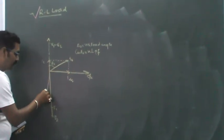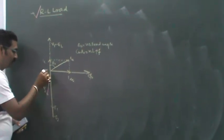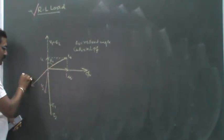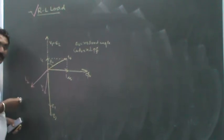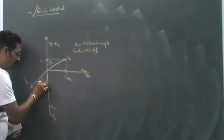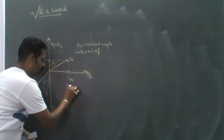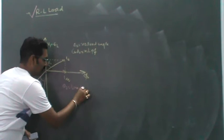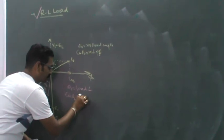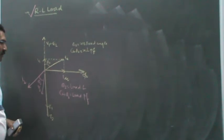If this is the load voltage V2 and this is load current I2, then the angle between V2 and I2 is theta_2. This theta_2 may be termed as the load angle, and cos theta_2 will be the load power factor.